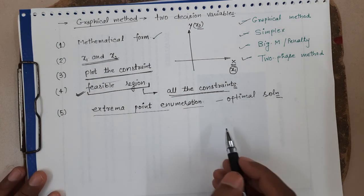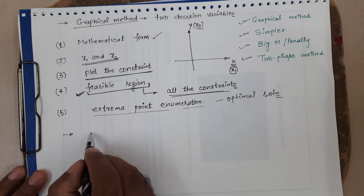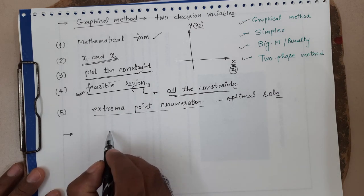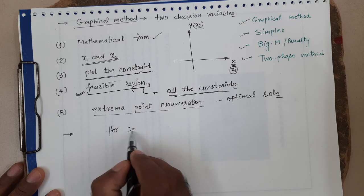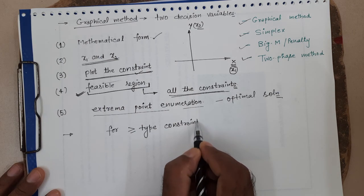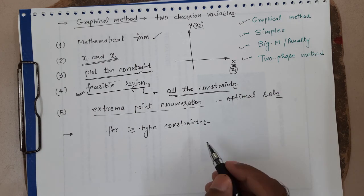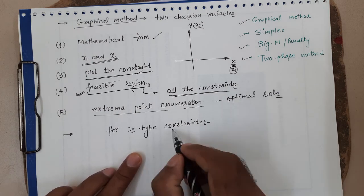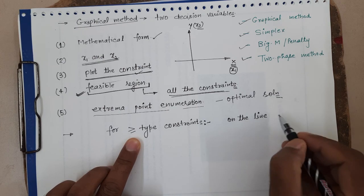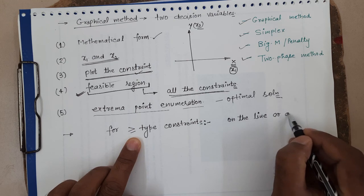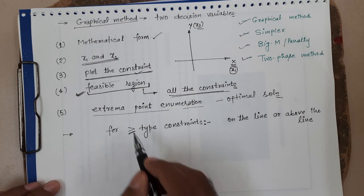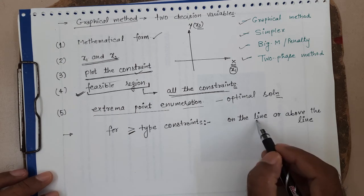Before we take an example, let us note a few more points. The constraints may be of equality or inequality type. If the constraints are of the greater-than-or-equal-to type, then the feasible region may be on the line or above the line — it can include the line itself, since equality is possible.